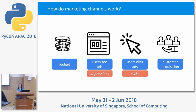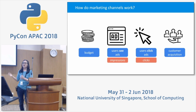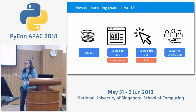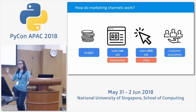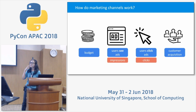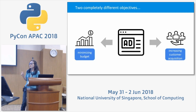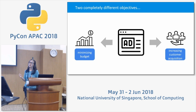Our marketers at Traveloka define a particular level of budget and allocate it to specific marketing channels. From those channels, users see ads — counted as impressions. Some users click the ads — counted as clicks. A fraction of those clicks lead to purchases of flight or hotel tickets — that's customer acquisition, which is where we get our revenue.